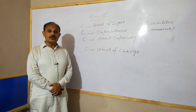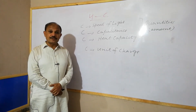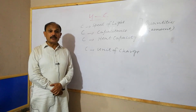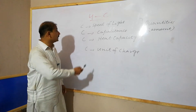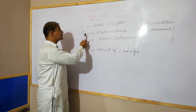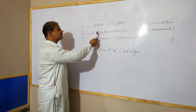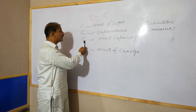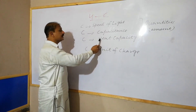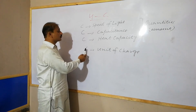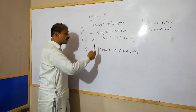In the name of Allah, who is the most beneficent and merciful. Today I will discuss the four C's. Look here: the first C is the speed of light, the second C is the capacitance of a capacitor, the third one is heat capacity, and the fourth C is the Coulomb, which is the unit of charge.